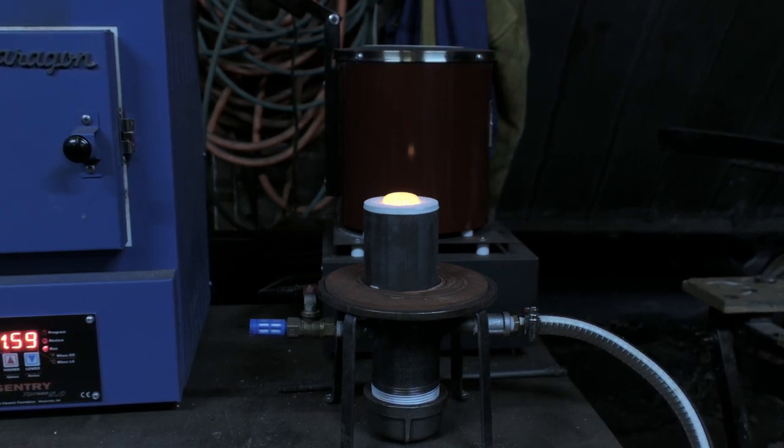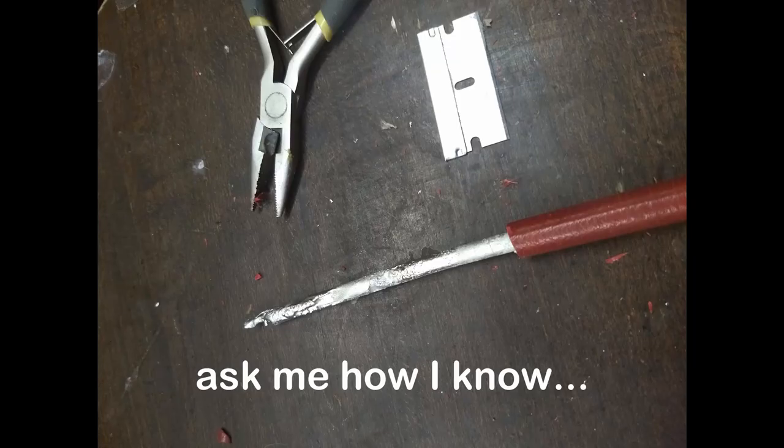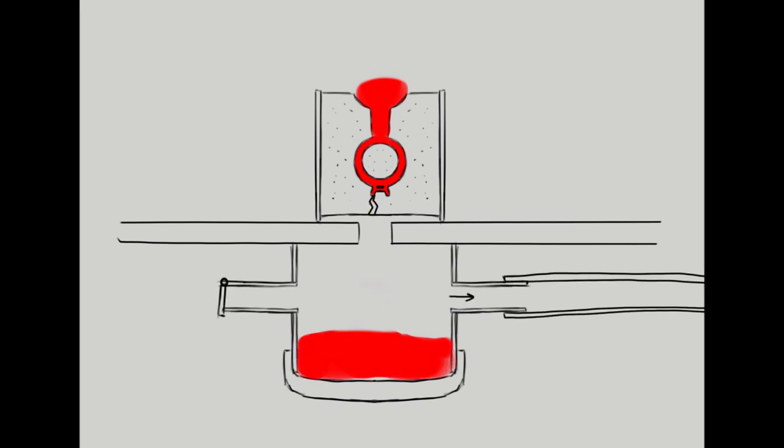So the basic idea behind a vacuum casting table is to use that negative pressure from the vacuum to help pull that molten metal down into all the fine details of the mold. And really, this can be done by just hooking a vacuum pump straight up to a table, but if there's ever a blowout or a crack in the mold, all that molten metal is just going to flow straight to the pump and destroy it. So to keep that from happening, my plan is to make a small chamber where that molten metal can fall into in the event of a blowout. That way the metal can then be retrieved.